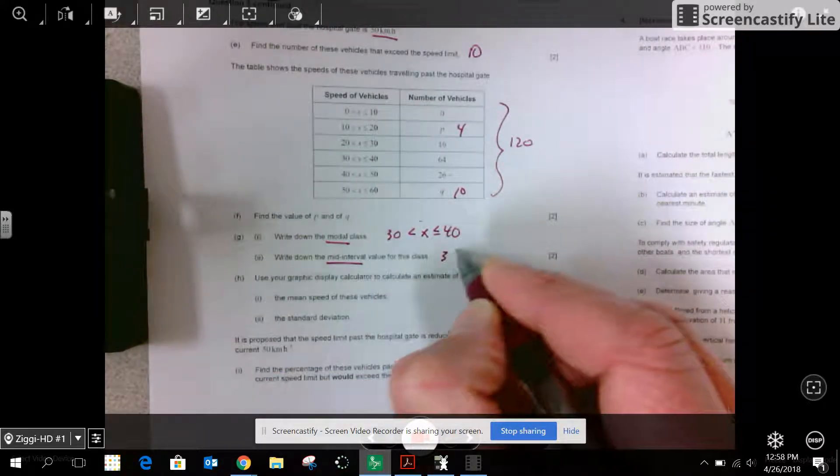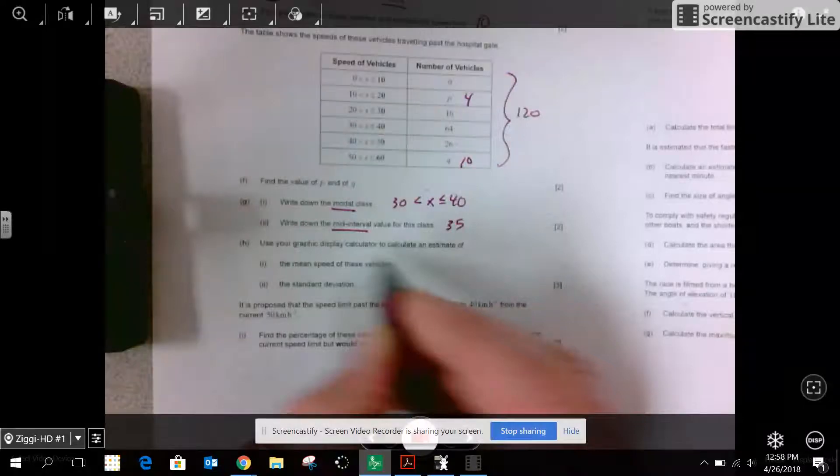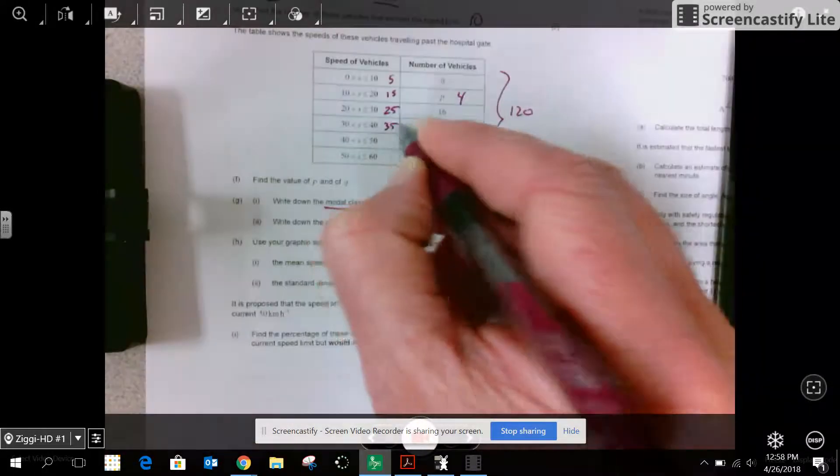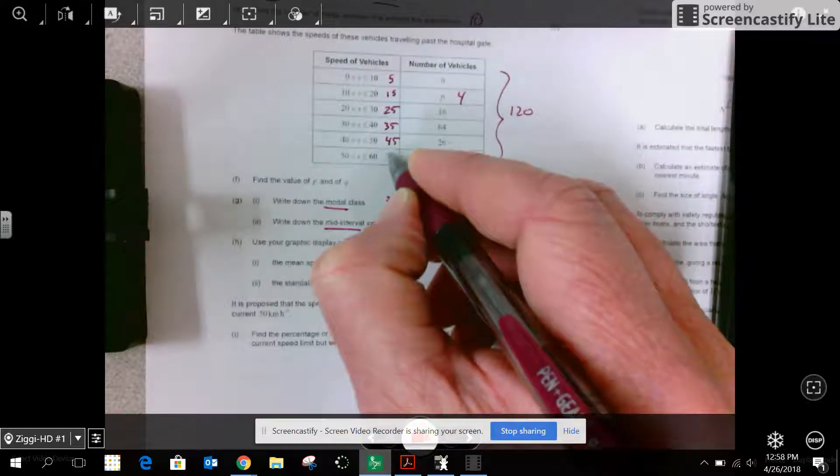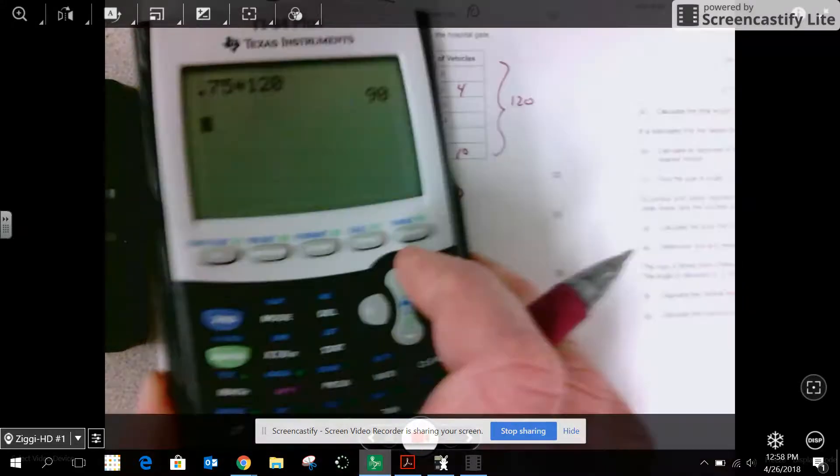Use your GDC to calculate and estimate. Okay, this is the main part I wanted to get to. To estimate a mean from a table here, you use all of the midpoints. And we assume that the values in the interval are the midpoints. Because we don't know the individual values. And so we're going to do a frequency table. I'm going to go to stat. Edit. And I want to enter my midpoints. So 5, 15, 25 as my values.